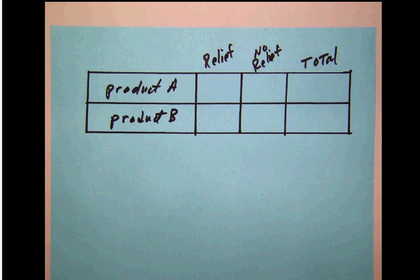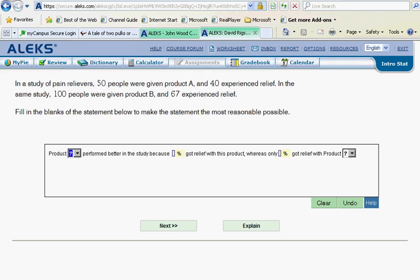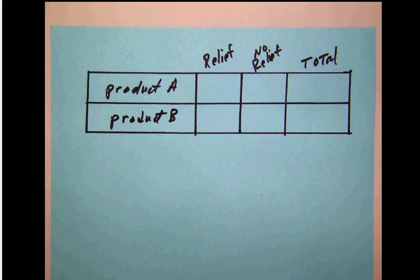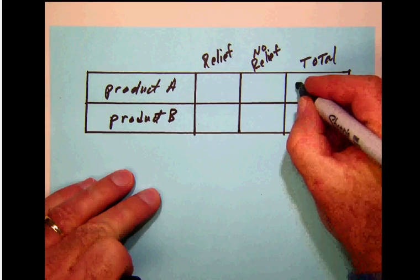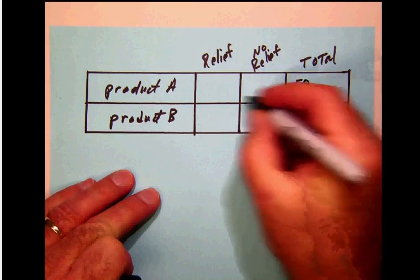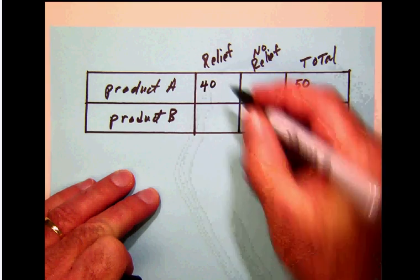Let's go back now and read this very carefully. In a study of pain relievers, 50 people were given product A and 40 of them experienced relief. As we begin to organize that, let's notice that there were 50 people and 40 of the 50 experienced relief.